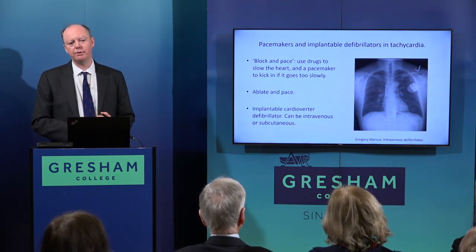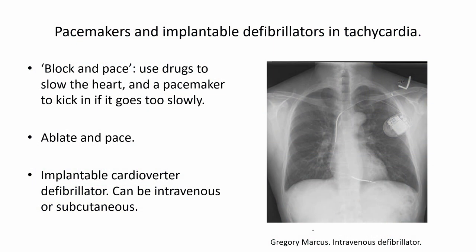Occasionally pacemakers are needed even in tachycardia. A 'block and pace' strategy involves giving a drug to slow the heart down and implanting a pacemaker to prevent going too slow — providing both a ceiling and a floor on heart rate. Sometimes cardiac ablation inadvertently hits the wrong part of the conduction system, making the heart go too slowly, so you ablate and then pace. Some patients have an implantable cardioverter-defibrillator — an ICD — which looks similar to a pacemaker but has thicker leads. When it senses ventricular tachycardia it delivers a shock directly into the heart to terminate it.